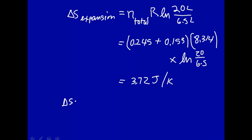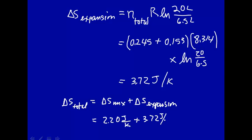And therefore the total entropy change for both processes would be the entropy of mixing plus the entropy change for expansion. The mixing we found was 2.20 joule per kelvin, and the expansion was 3.72 joule per kelvin. So the total comes out to be 5.92 joule per kelvin.